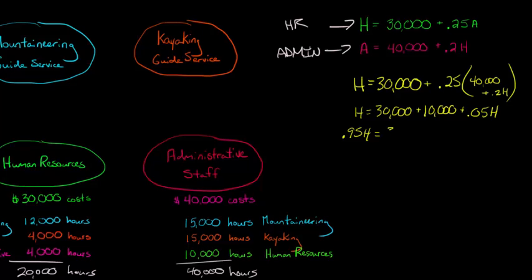And then that's going to be equal to, I'll just add the 30,000 and 10,000 together. That's 40,000. And then I just subtract that 0.05 from each side, and it gives us 0.95H. And now we're going to divide each side by 0.95, and that will give us H. So H is going to be $42,105.